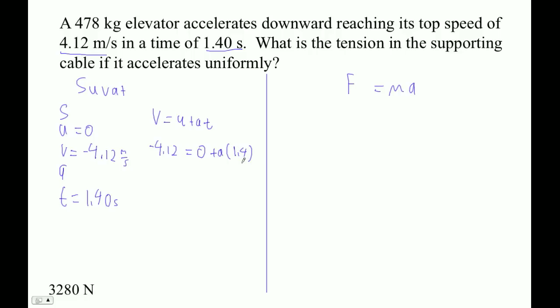So negative 4.12 divided by 1.4 is negative 2.94, I'll say 2.9 seconds. Okay. And now we're going to solve an F equals MA. That would be meters per second squared.